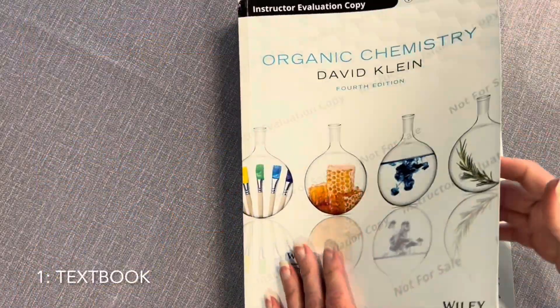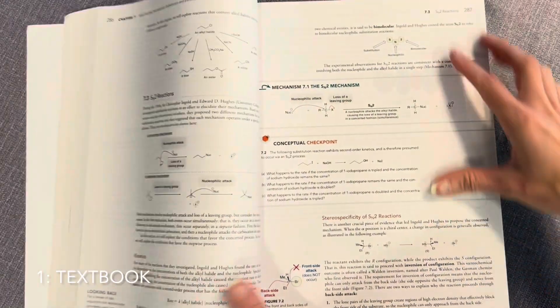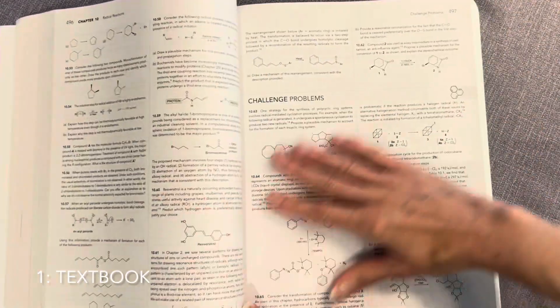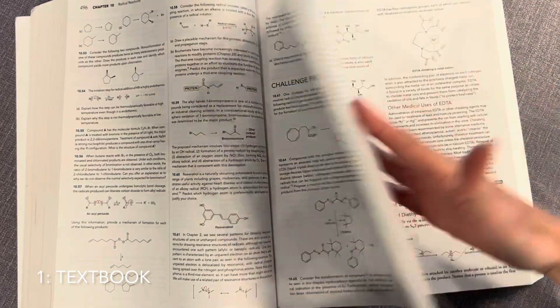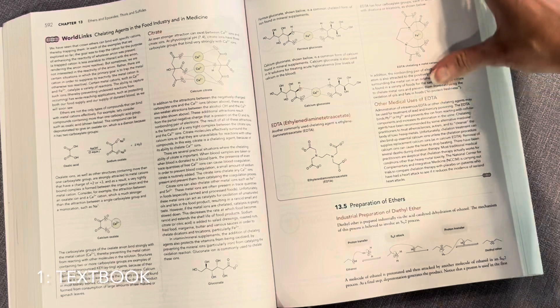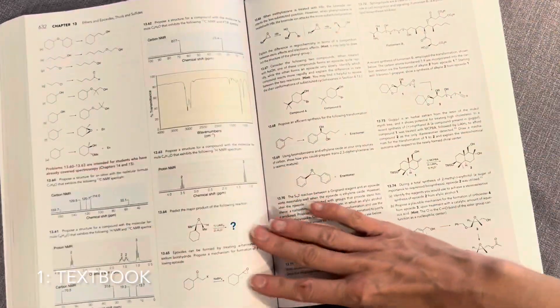Your textbook. And if you don't like the book that your professor requires, which happens sometimes, my advice is to pick up a very old, very cheap copy of David Klein's textbook called Organic Chemistry. It's amazing, and a second edition is only about $20.